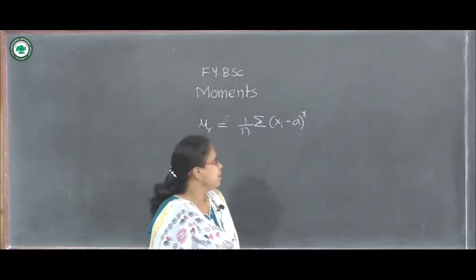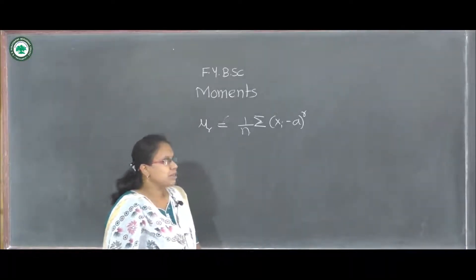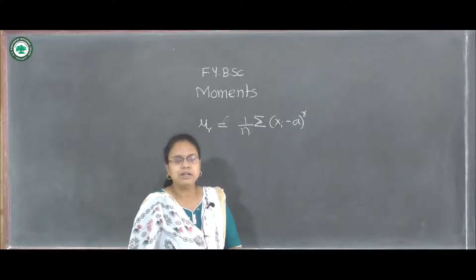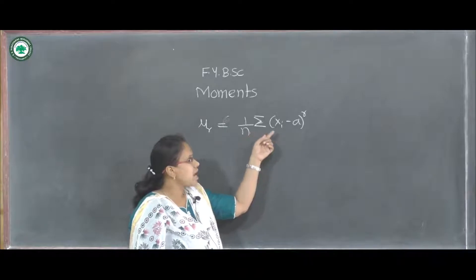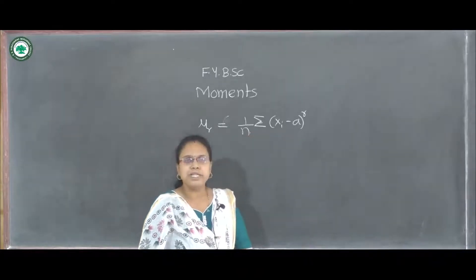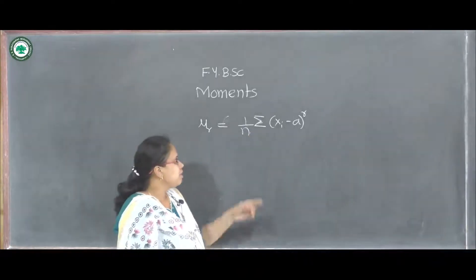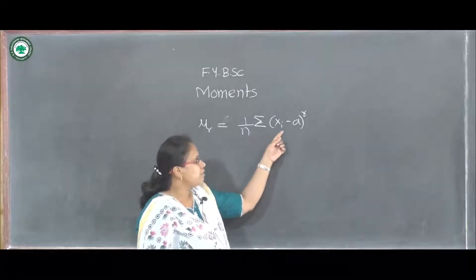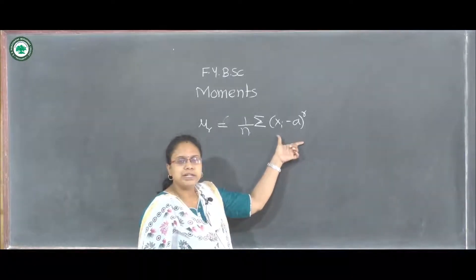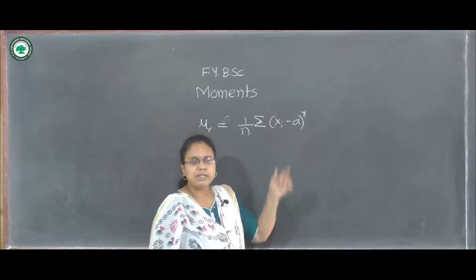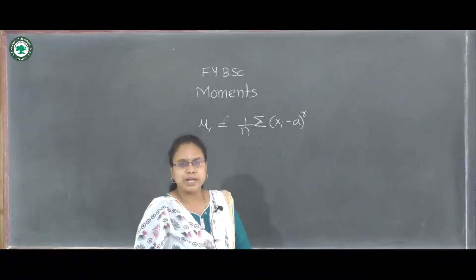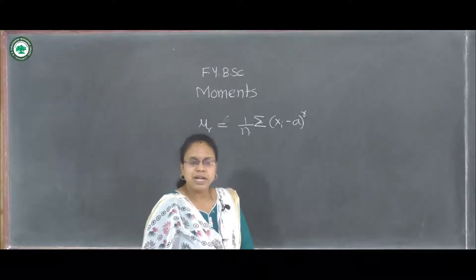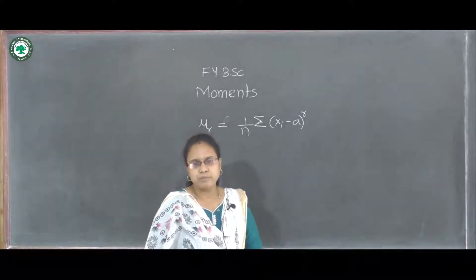Let us see the definition of the rth moment. Moments are denoted by μr, and the rth moment about point a is given by (1/n) into summation of (xi minus a) raised to r. This is the moment around point a. We can choose different values of a, and depending on that there are different types of moments.